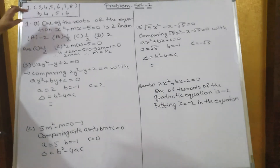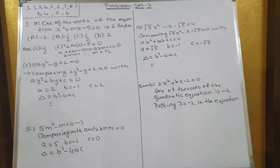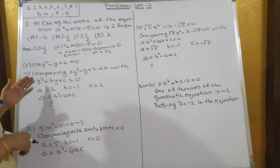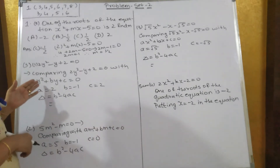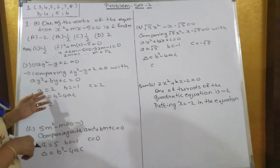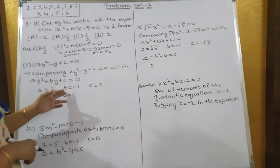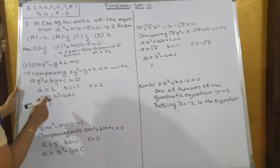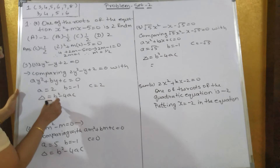Now sum number 3. The equation is 2y² - y + 2 = 0. We have to find the value of the discriminant. Comparing this equation with ay² + by + c = 0: a = 2, b = -1, c = 2.